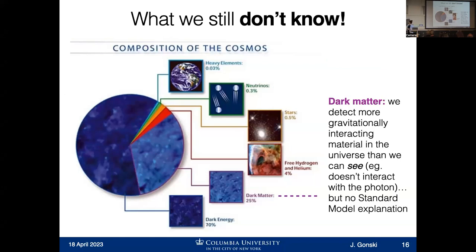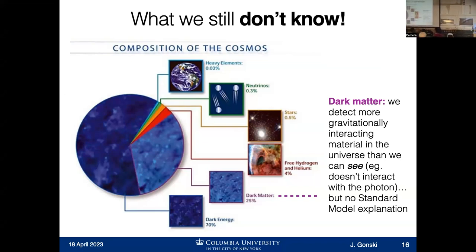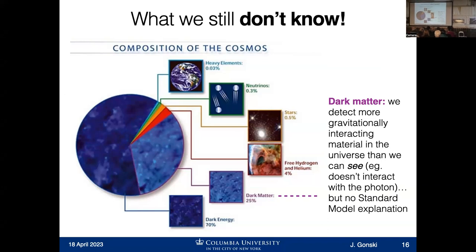Next on this list is dark matter, which makes up about 25% of the universe. We call it dark because we can't see it — it doesn't interact with the photon. But we know it's there because of the amount of gravitationally interacting material we observe. Things like galactic rotation curves tell us there's more gravitational force material in the universe than we can see. But there's no particle in the standard model that can match that description or explain this phenomenon. We think there should be a particle explanation, and we'd like to observe it experimentally.